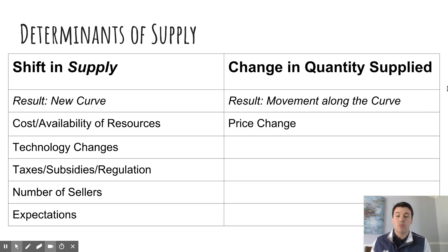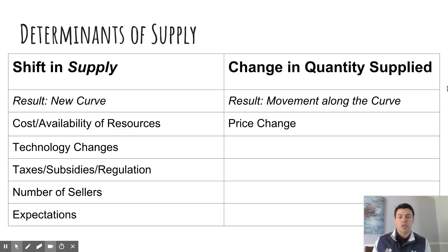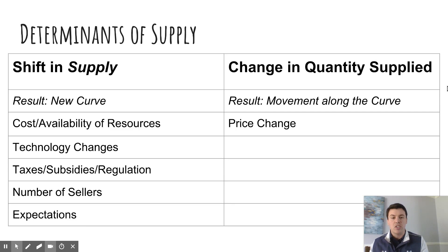Technology changes that come along and make us more productive in our production can cause an increase in supply. If we have to regress to a previous method that's not as efficient, that's going to be a shift to the left — a decrease.